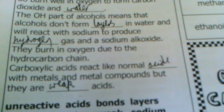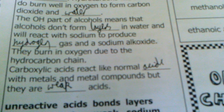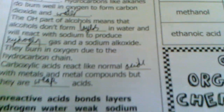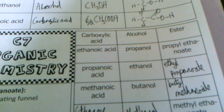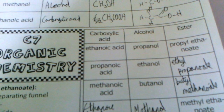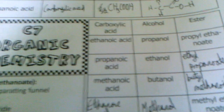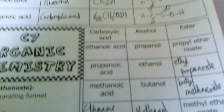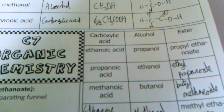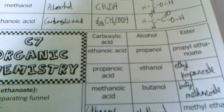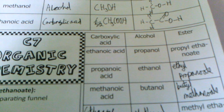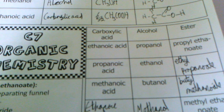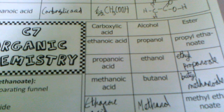Carboxylic acids react like normal acids with metals and metal compounds, but they are weak acids, meaning the reactions can be reversible. To make an ester, you mix a carboxylic acid and an alcohol together. The name of the ester depends on the alcohol and the carboxylic acid involved. For example, ethanoic acid and propanol — the alcohol comes first with an '-yl' ending, so 'propyl', and the carboxylic acid gets an '-anoate' ending, so 'ethanoate': giving propyl ethanoate. Propanoic acid and ethanol gives ethyl propanoate.